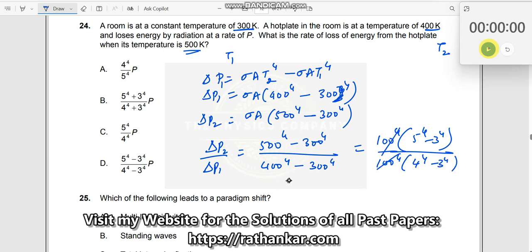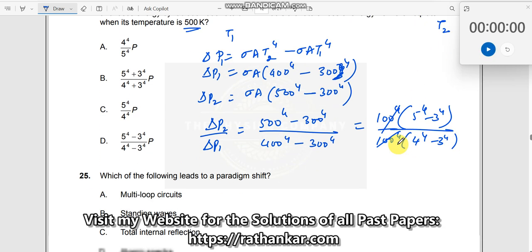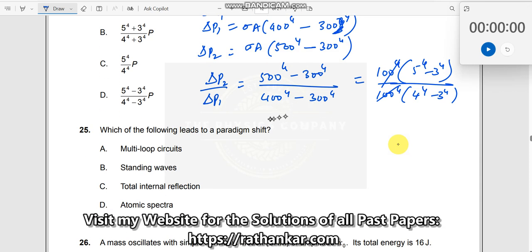So this and this goes away. So now what do we have? Delta P2 is equal to 5 power 4 minus 3 power 4, divided by 4 power 4 minus 3 power 4.